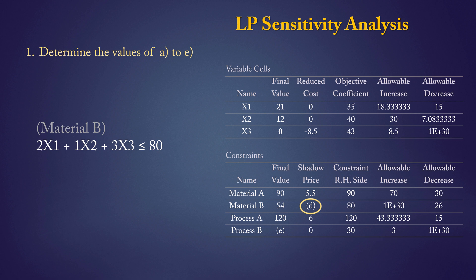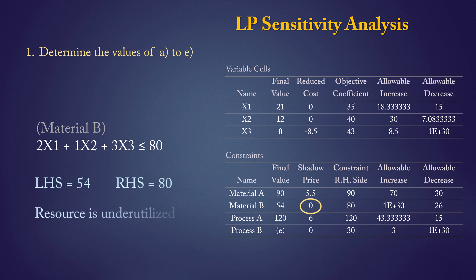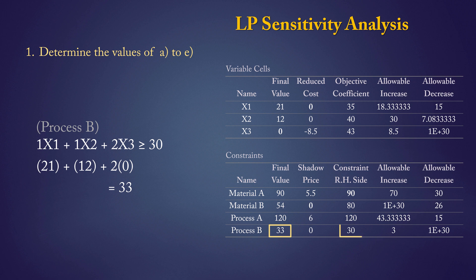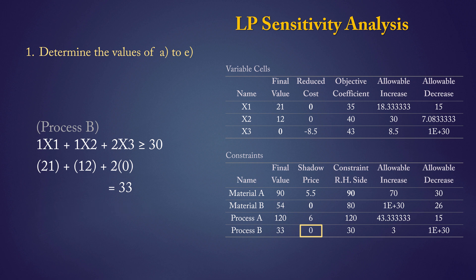D represents the shadow price for the material B constraint. This constraint is not binding because the left side is less than the right side. Constraints that are not binding will have a shadow price of 0 — we say there is a slack, meaning the right side is underutilized. The slack amount is 80 minus 54, which gives 26. For E, the left side of the process B constraint requires plugging in the optimal decision variable values, giving 33. Since the left side exceeds the right side by 3, we have a surplus of 3 units. Note that a constraint is correctly stated as non-binding only if its left and right sides differ, or if it has a non-zero slack or surplus.